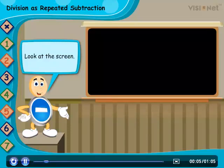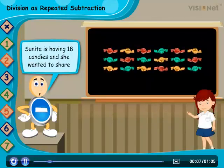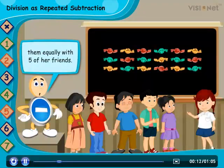Hello friends, look at the screen. Sunita is having 18 candies and she wanted to share them equally with 5 of her friends.